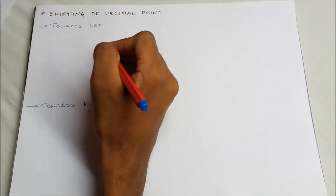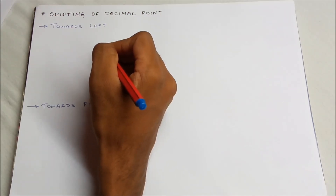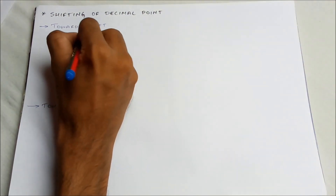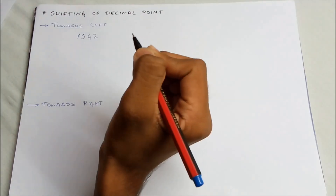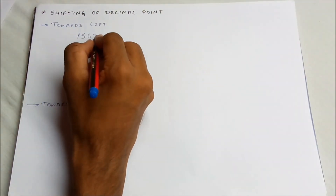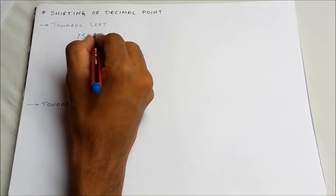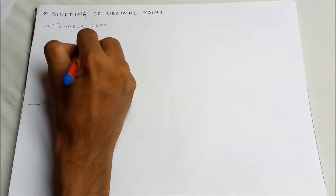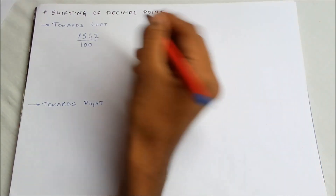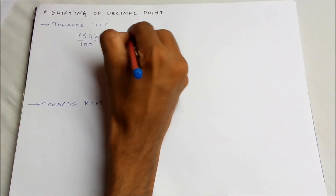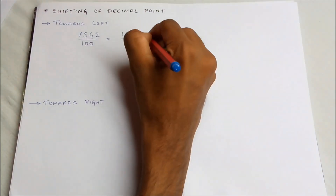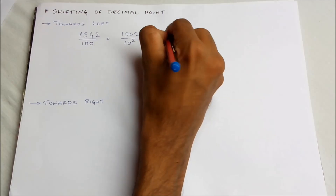So let's now learn how to shift a decimal point. First let's try to shift a decimal point towards the left. Let's consider the number 1542. To shift the decimal point of this number towards the left by 2 digits, we divide it by 100, that is 10 to the power of 2. So this becomes 15.42.